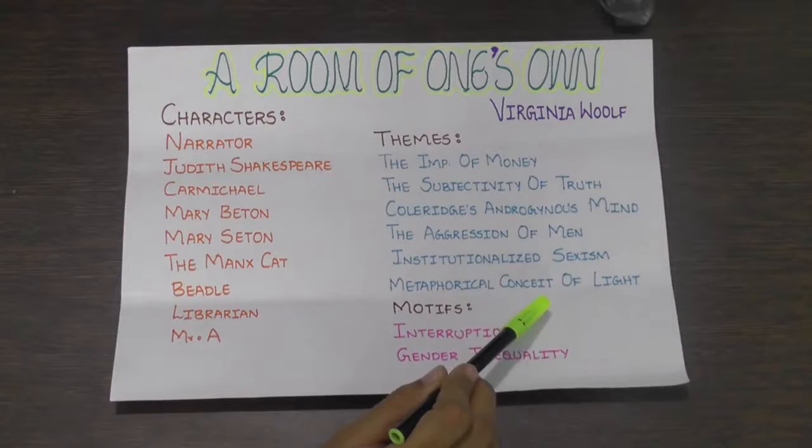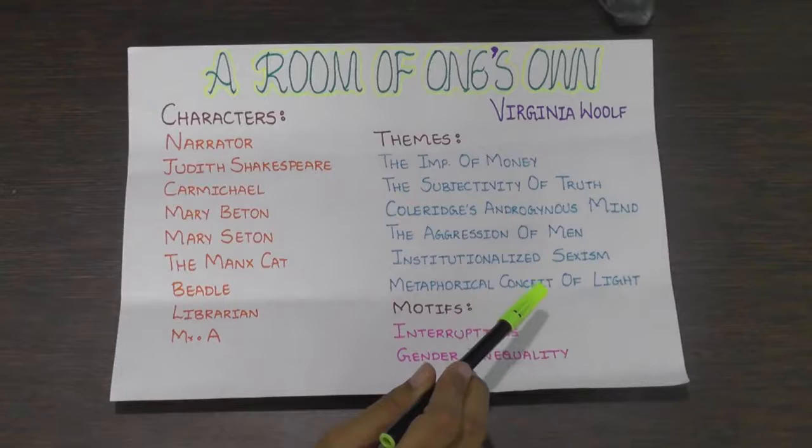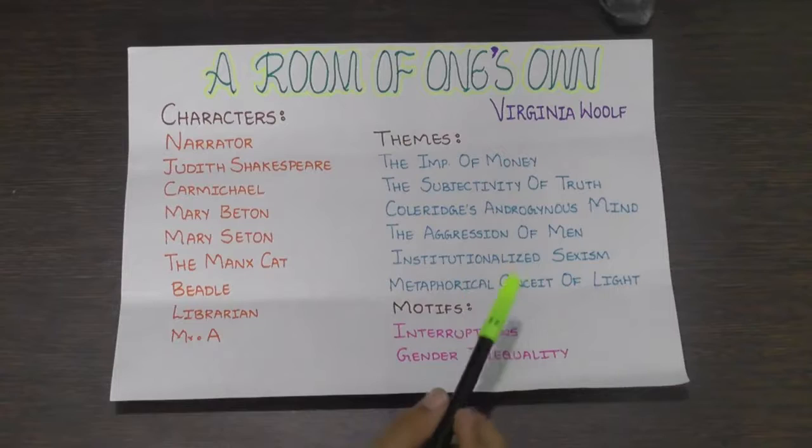The final theme is the Metaphorical Concept of Light. Woolf threads the concept of light and beauty throughout A Room of One's Own as a metaphor for genius.